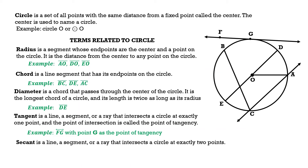And lastly, we have the secant. A secant is a line, segment, or ray that intersects a circle at exactly two points. Based on the given figure, an example is line AC. Notice that the secant is also a chord, but it is an extended chord. That is the characteristic of a secant — it intersects a circle at exactly two points.